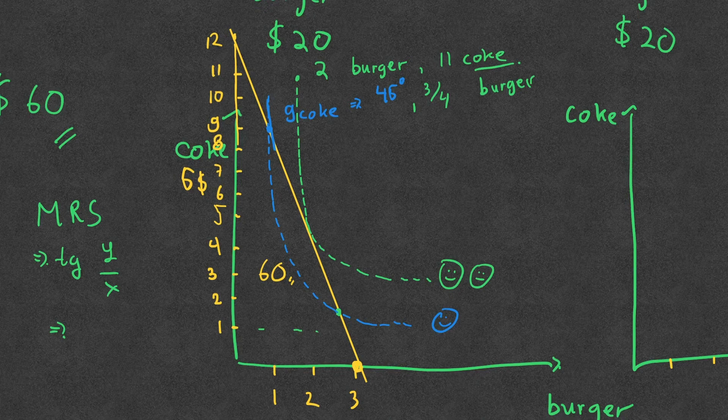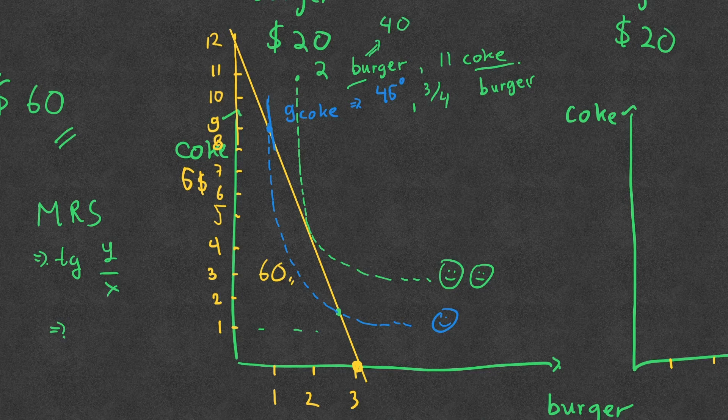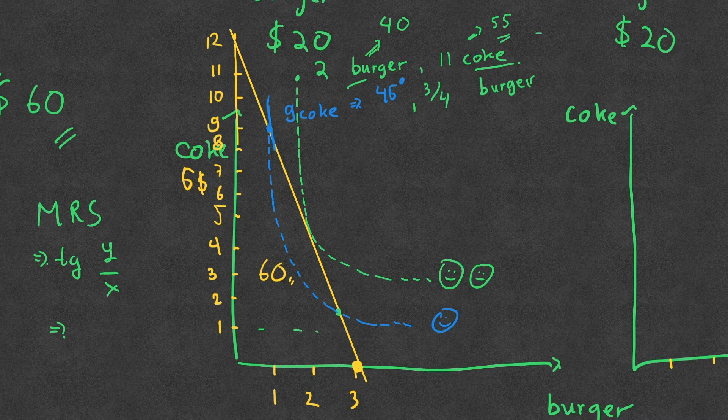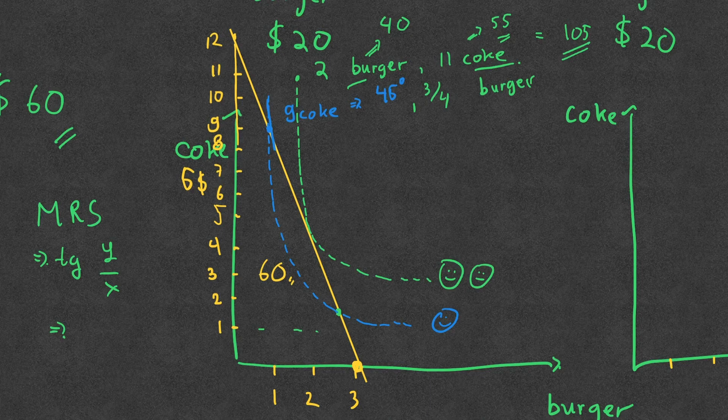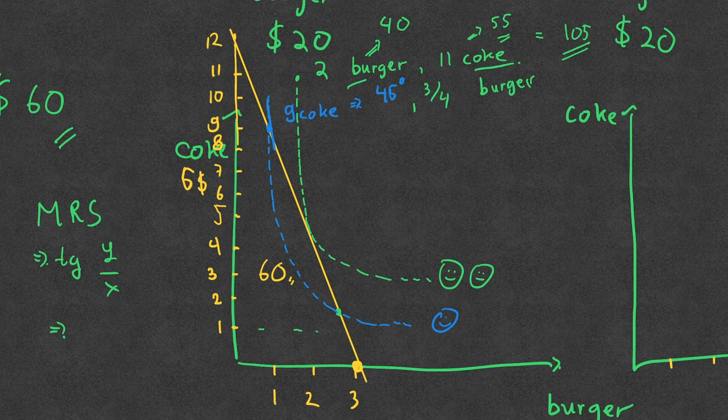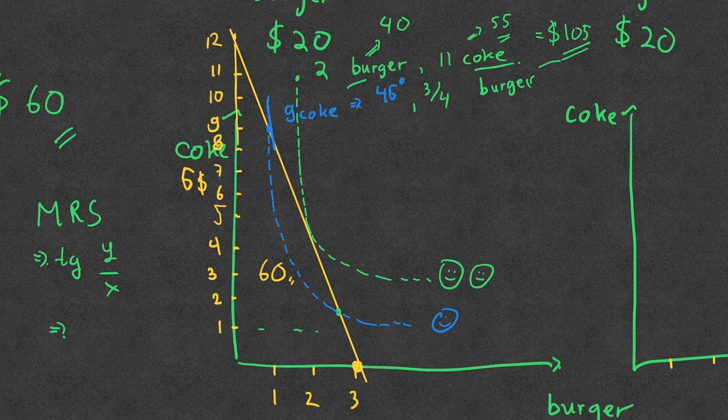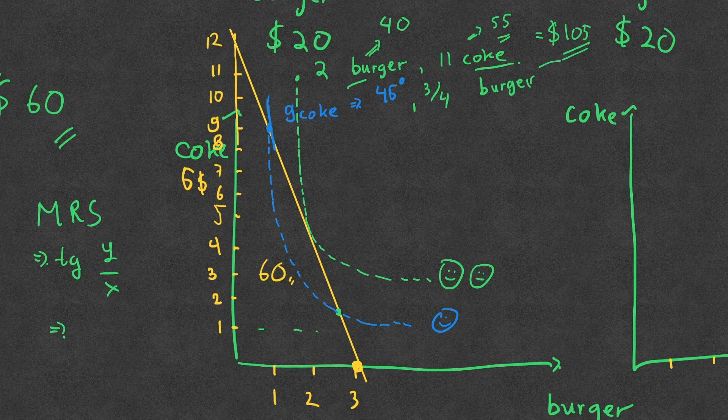But the question is, it's beyond your budget. Why? Because two burgers will cost you $40, and 11 cokes will cost you $55. So it means at the end you will have $105, which is beyond your capability to buy because you only have $60. So what do you have to buy?